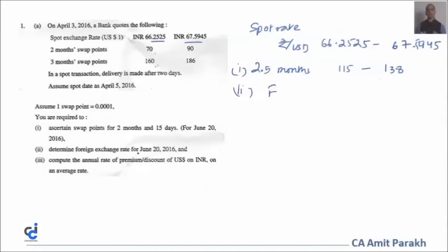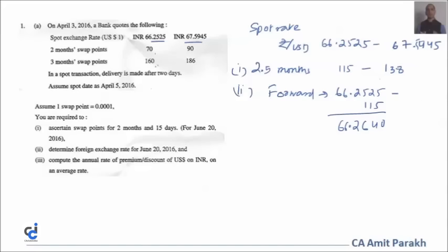When they say 'determine the foreign exchange rate for June 20, 2016,' they mean the forward exchange rate. The forward bid rate is 66.2525 + 0.0115 = 66.2640. Similarly, we add 138 to 67.5945: 67.5945 + 0.0138 = 67.6083. These are the two-and-a-half-month forward rates — bid and ask.